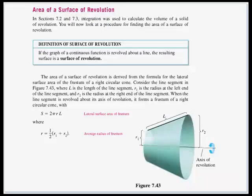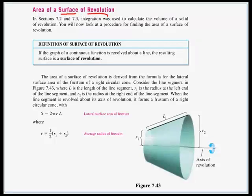In this video we're going to finish up section 7.4, and our last topic is the area of a surface of revolution. If the graph of a continuous function is revolved about a line, the resulting surface is a surface of revolution.